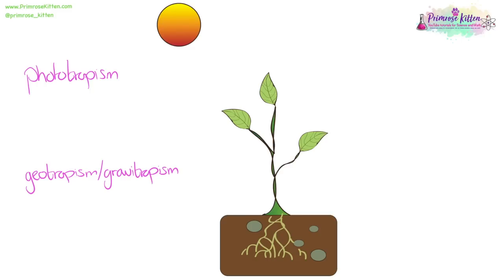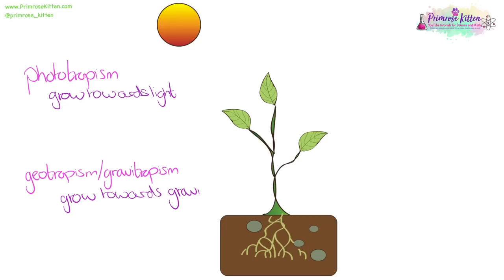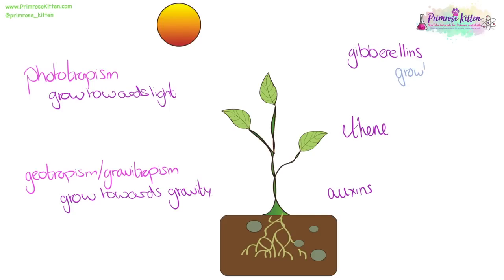Phototropism means something grows towards the light. Geotropism or gravitropism means something grows towards gravity — meaning roots always grow downwards and shoots always grow upwards. Gibberellins are important for growth, ethene is important for ripening plants, and auxins are important for growth in the correct direction.